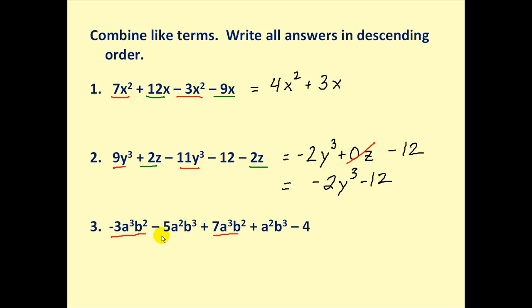Next, we have an a squared b cubed term and another one here. Now they do want us to put the highest degree terms first, but both of these have degree 5. So it doesn't matter which one we choose.